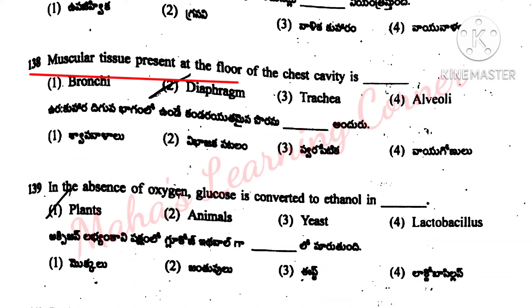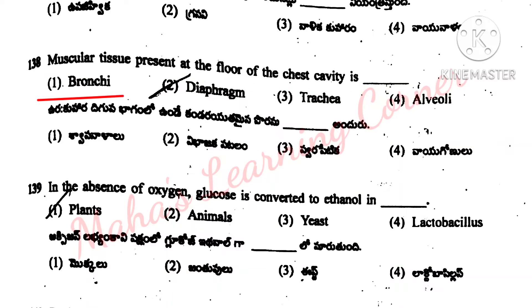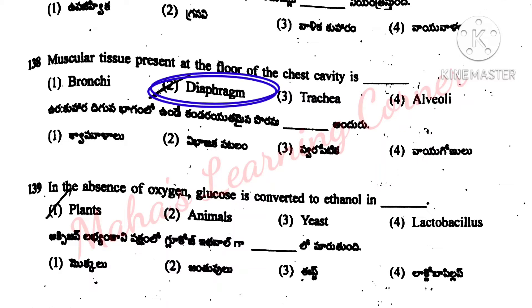Muscular tissue present at the floor of the chest cavity is: bronchi, diaphragm, trachea, alveoli. Correct answer is option 2: diaphragm.